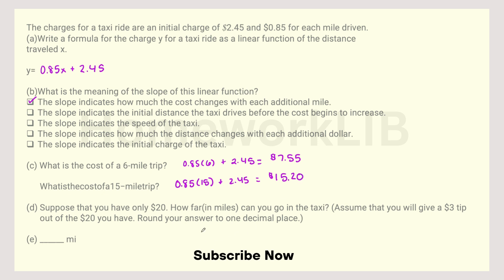Suppose that you have only $20. How far can you go with the taxi? Assume that you will give a $3 tip out of the $20 you have. Round your answer to one decimal place. So if you're going to give a $3 tip out of the $20 you have, you're really only going to have $17 for your trip. So $17 equals $0.85X plus $2.45.